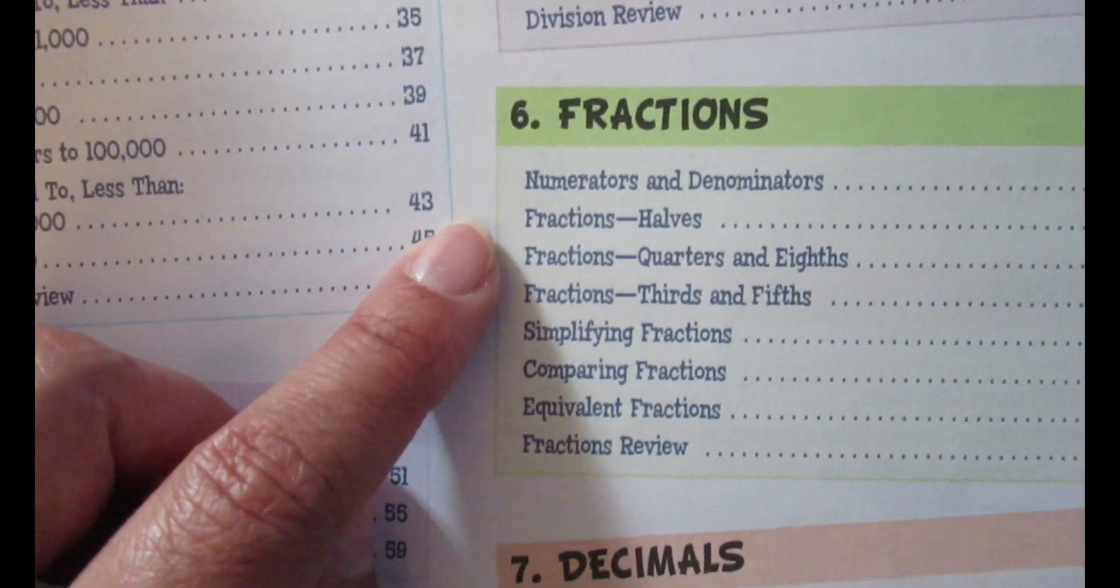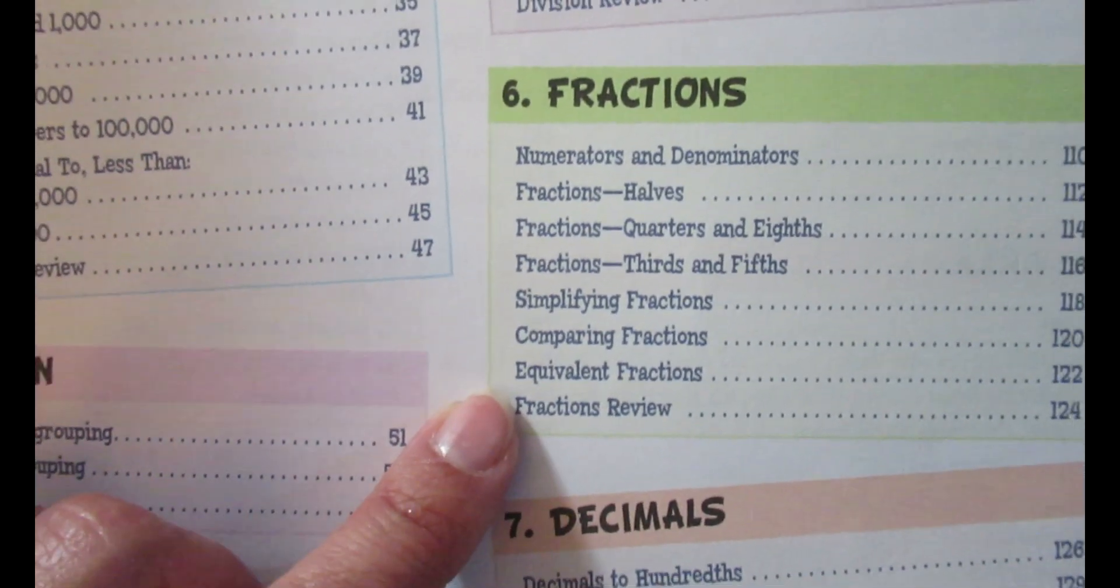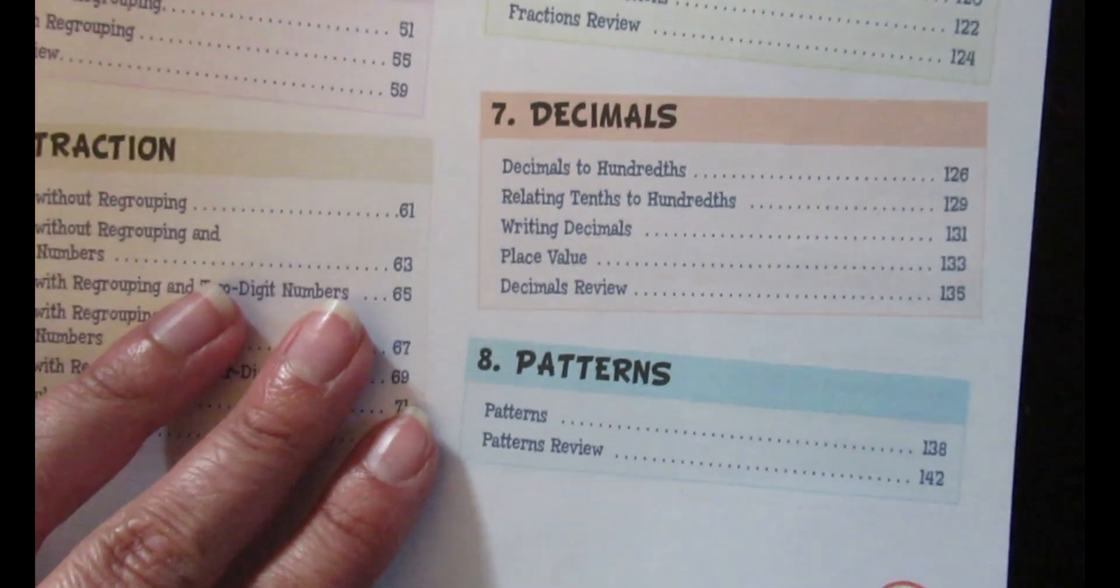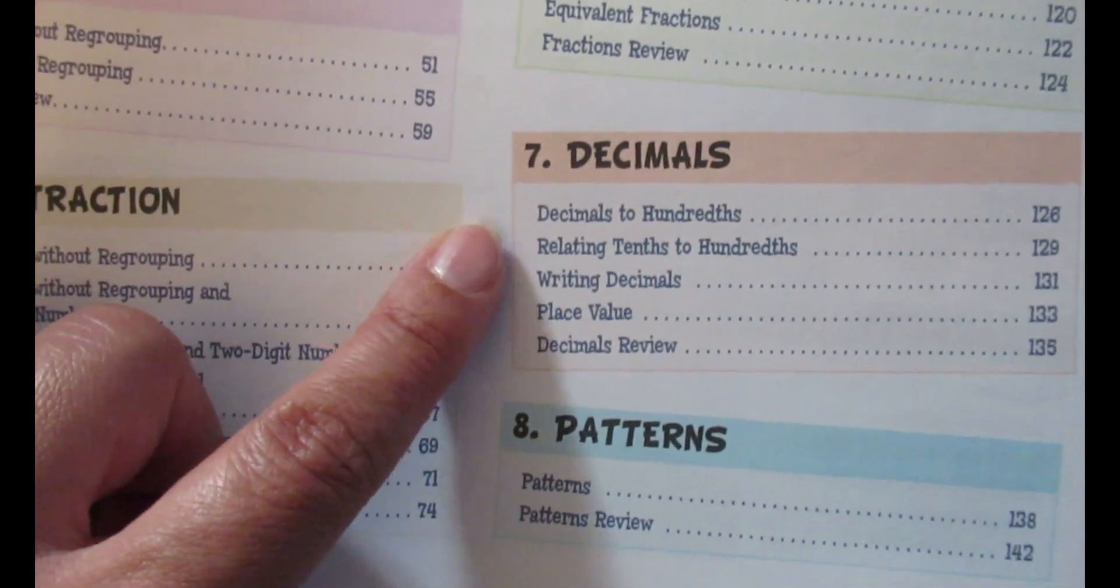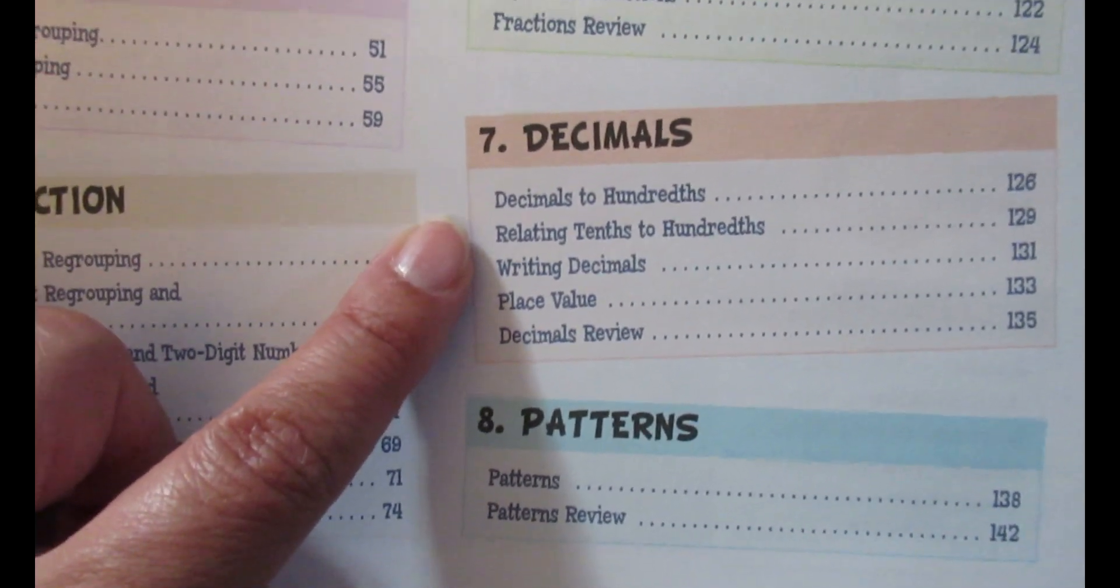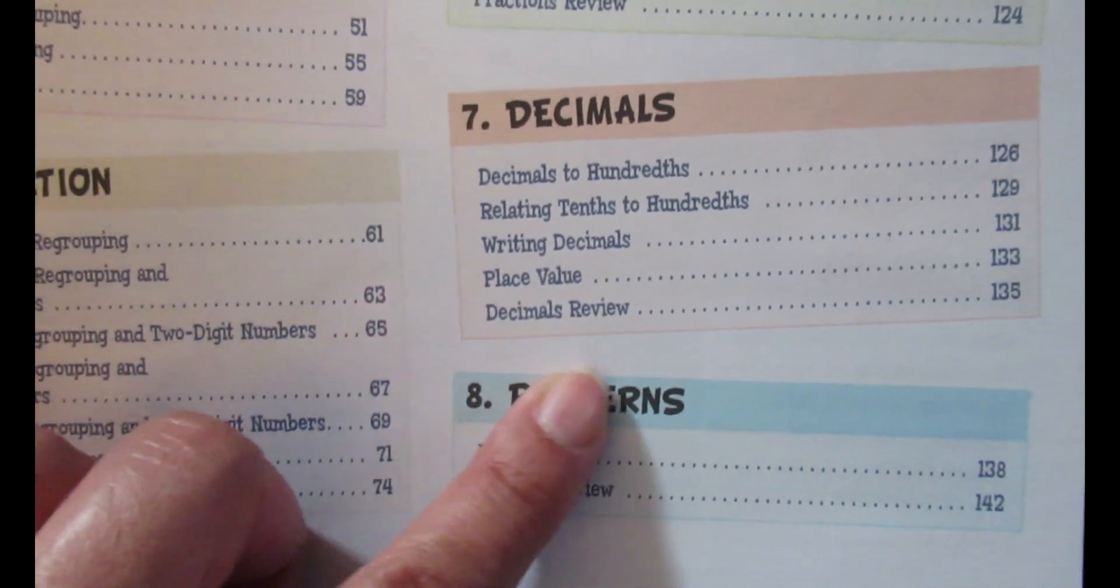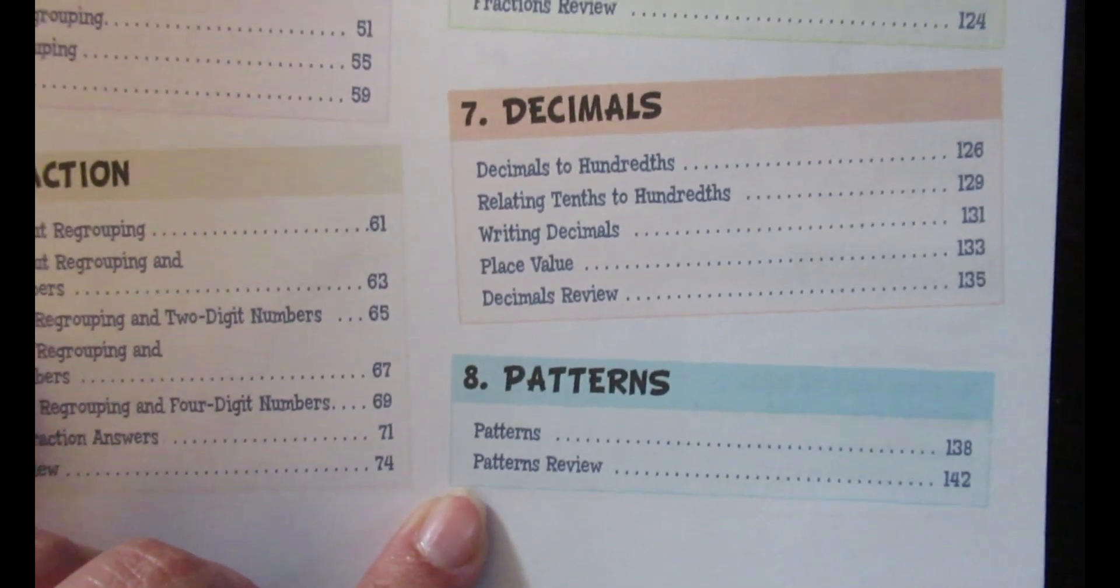Fractions starts with numerators and denominators and ends in equivalent fractions. Decimals starts in decimals to hundredths, ends in place value and a review, and patterns.